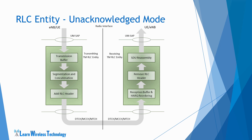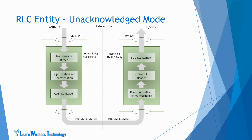A relevant header is also included in the RLC PDU before transmission. At the receiving side, when the entity receives the RLC PDUs or UMD PDUs, it performs certain functions before delivering the PDUs to the upper layer. The entity first detects whether there are any duplicate PDUs received; if duplication is detected, it is discarded. It then reorders the PDUs according to sequence number if received out of sequence. Then the RLC header is removed and the PDUs are reassembled into SDUs, which are delivered to the upper layer in ascending order of sequence number. Any PDUs which cannot be reassembled into an RLC SDU are discarded. Note that HARQ reordering is not applicable for data received in multicast channels MCCH and MTCH.